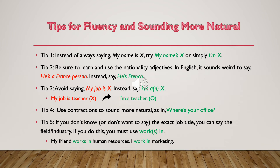Tip four is similar to tip one: use contractions as much as possible to sound more natural. 'Where is your office?' sounds a little robotic. If you contract it with an apostrophe S — 'where's your office?' — it sounds much more natural and is also much easier to say. So use contractions when possible to sound more natural.